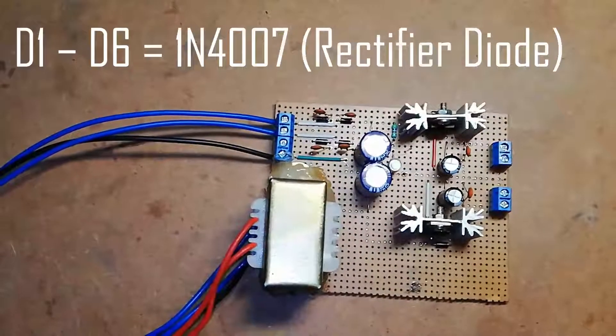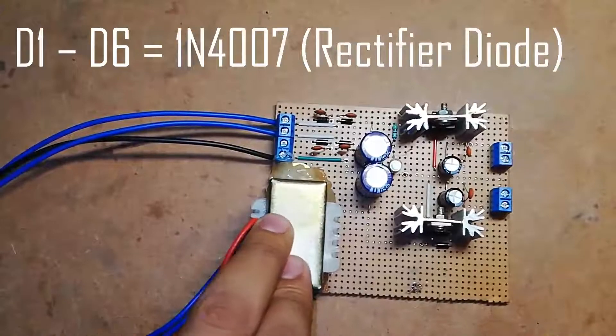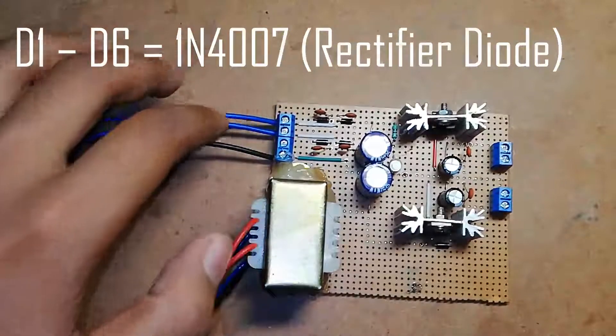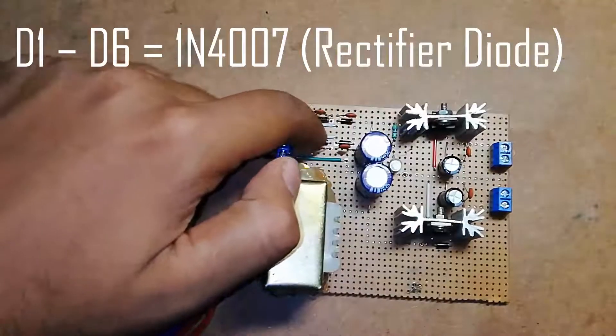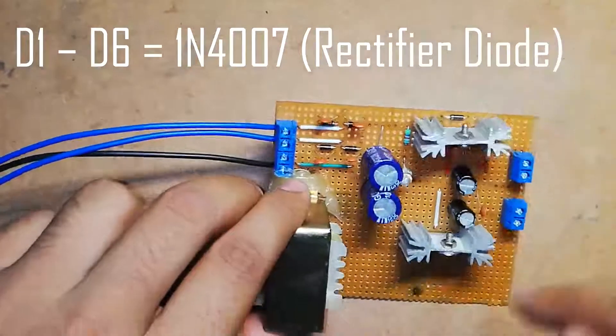Now let's see the semiconductors required for this project. Six diodes are used: D1, D2, D3, D4, D5, and D6. Each is a general purpose rectifier diode, 1N4007.